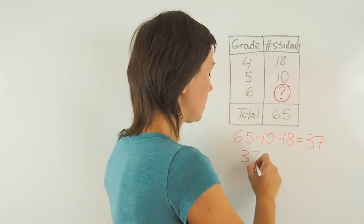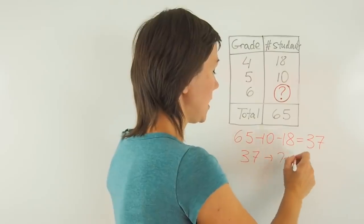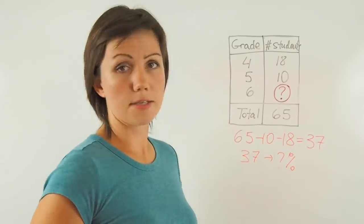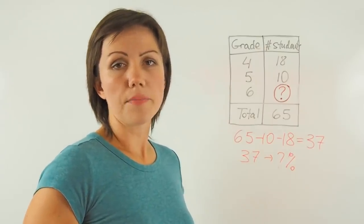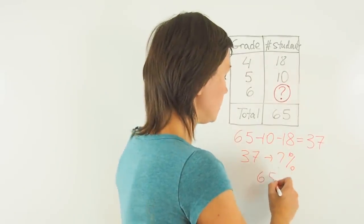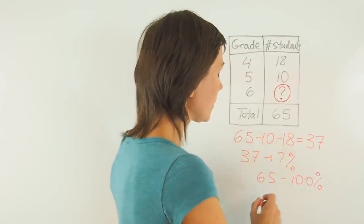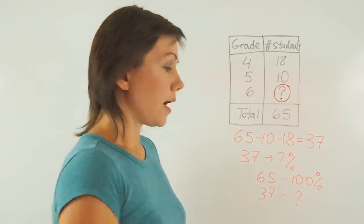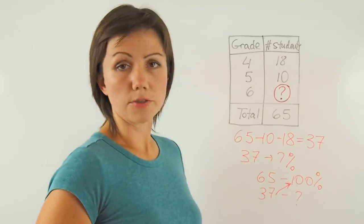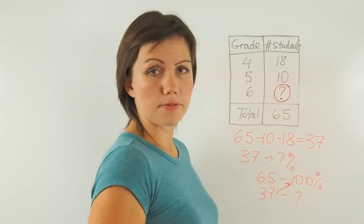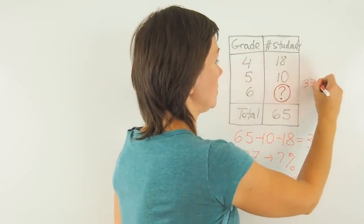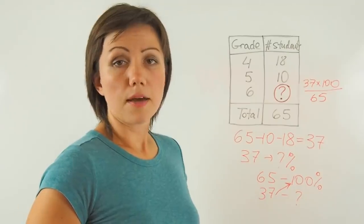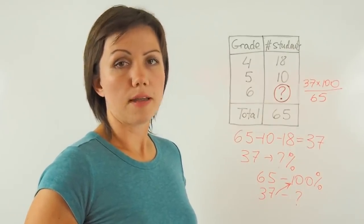Next, I need to convert 37 into percent. I don't know what percentage 37 is of 65, but I can find out by setting up a proportion. 65 is 100%, 37 is unknown. So I can multiply 37 by 100 and then divide that number by 65. 37 times 100 over 65, that will give me 56.9%.